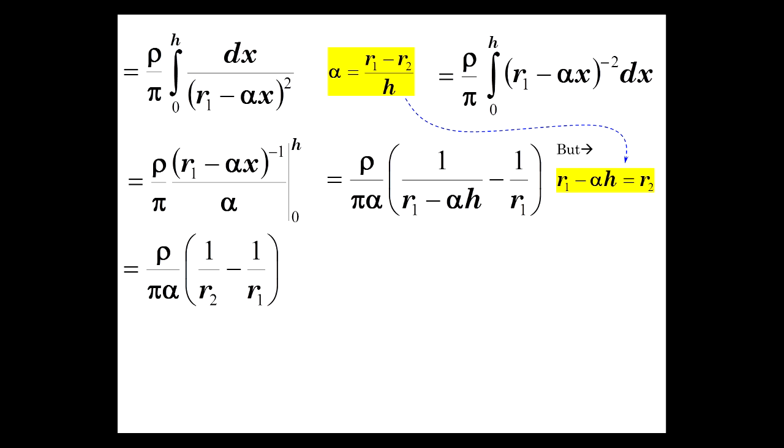So, rho over pi alpha, 1 over r2 minus 1 over r1. We can multiply this by r1 over r1 minus this r2 over r2. And that simplifies just a little bit more.